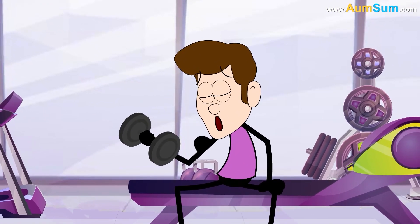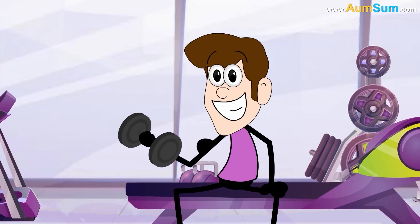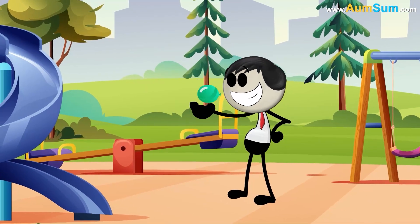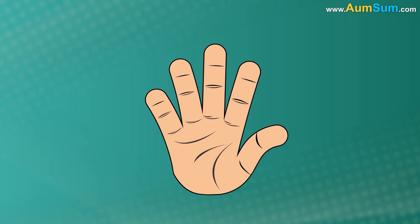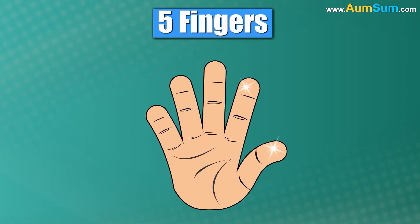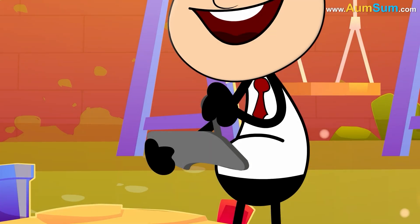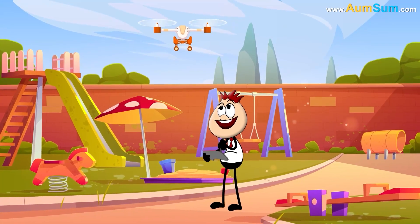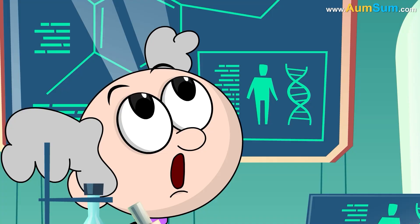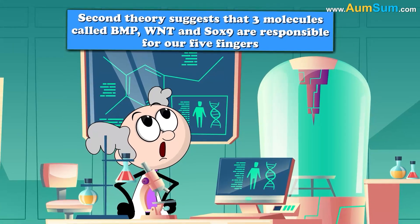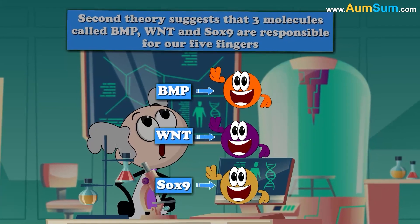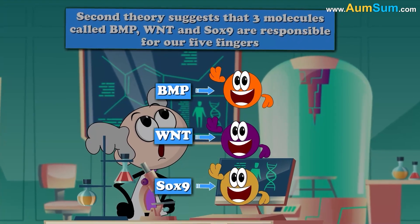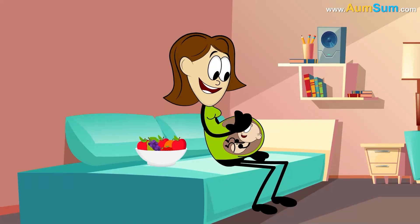Why do humans have five fingers? One theory suggests that we have five fingers because together they make a perfect strong grip — using them we can operate small objects with great control and precision. A second theory suggests that three molecules called BMP, WNT, and SOX9 are responsible for our five fingers, since in our embryonic stage they mark out spaces specifically for these five fingers.